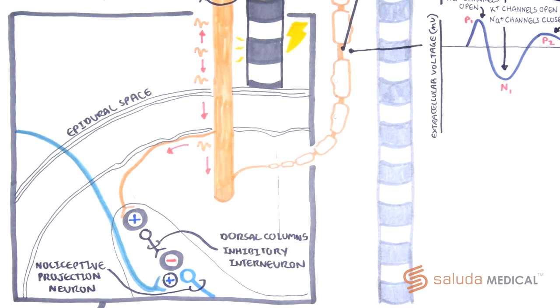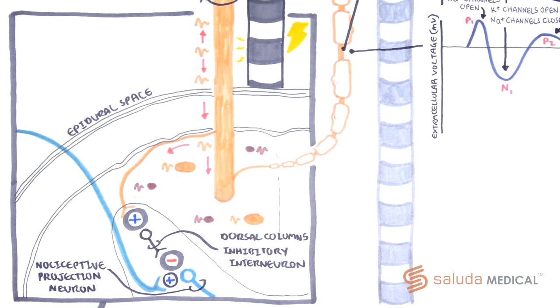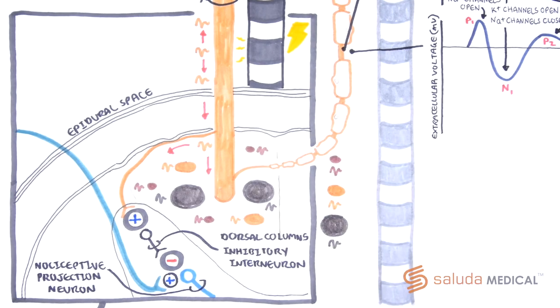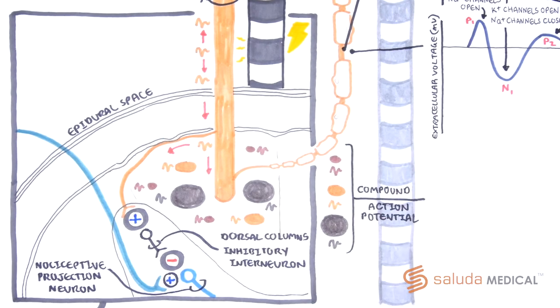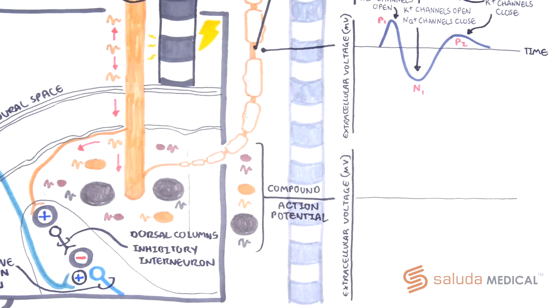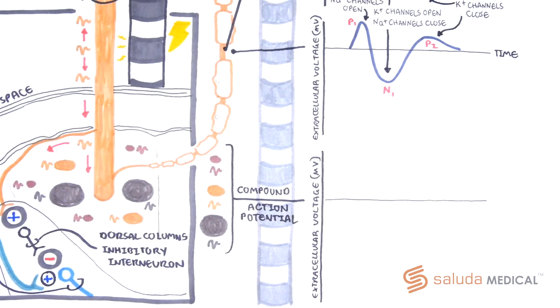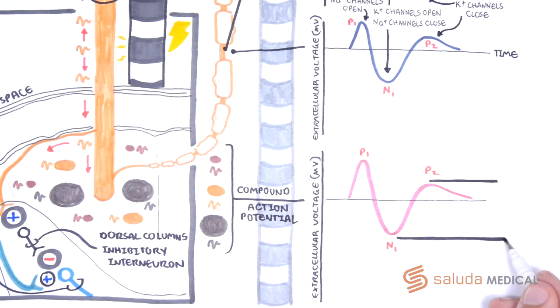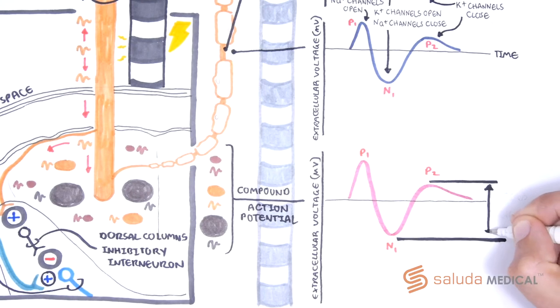In practice, however, spinal cord stimulation activates multiple fibers of different diameters, thereby triggering several action potentials from the dorsal column neurons, creating a compound action potential, the sum of all generated action potentials. As this compound action potential has been purposely elicited or evoked by some external source, it is called an evoked compound action potential, or ECAP for short. The size of the ECAP is typically calculated using the difference between the N1 and P2 peak.